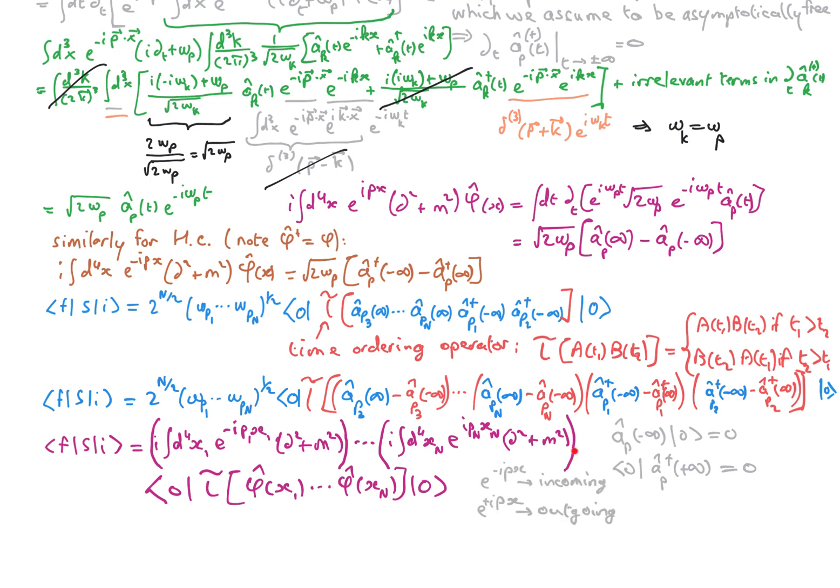This is the LSZ reduction formula, which connects the S matrix element to expectation value of field operators on vacuum. And this specific expectation value is called an n-point correlation function. So we see that all we need to get S matrix elements or equivalently the scattering amplitude M is the knowledge of these n-point correlation functions. So that makes them very popular in quantum field theory textbooks. Notice that these n-point correlation functions contain, in fact, much more information than what we need to get the S matrix element. So that's the role of the operators in front of the n-point correlation functions to project out the information which we are really interested in.